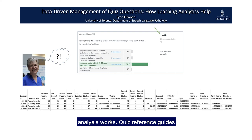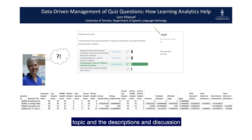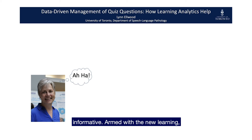Quiz reference guides assume some knowledge of multiple choice question analysis measures and were not a big help for me. I found a vast amount of literature on the topic, and the descriptions and discussion of the various indicators was very informative. Armed with new learning, I realized things were simpler than they first appeared — or rather, as simple as they first appeared when a little knowledge was applied.